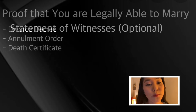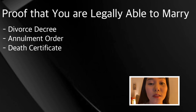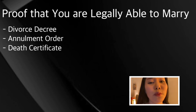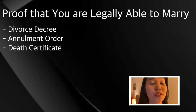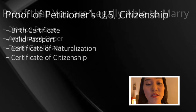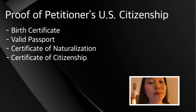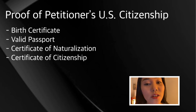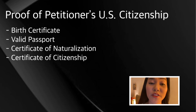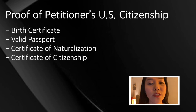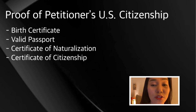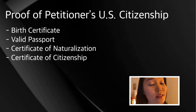Number seven, proof that you are legally able to marry. If previously married, provide a copy of the divorce decree, annulment order, or death certificate of the prior spouse. Number eight, proof of petitioner's U.S. citizenship — either a copy of a birth certificate or valid passport, certificate of naturalization, or certificate of citizenship, whatever is applicable.